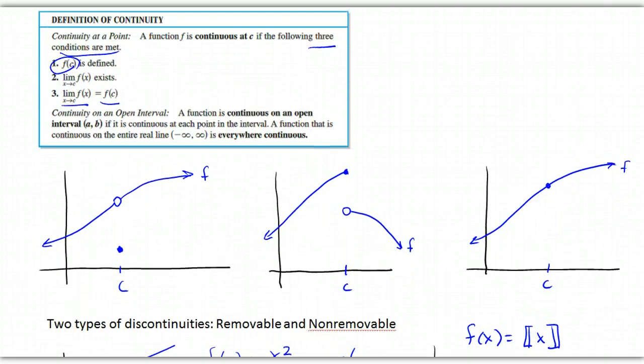So, let's look at three examples here. So, here I've got f of c is defined right there. And the limit is defined up there, but they aren't equal to each other. Therefore, this is not continuous.